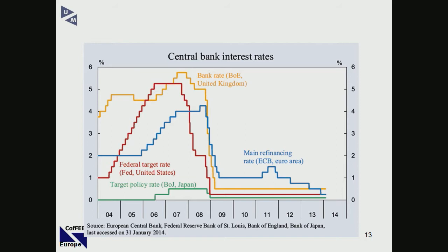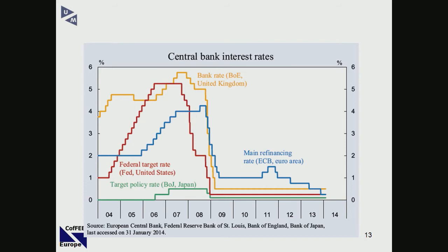In 2004 after the dot-com crisis, Greenspan lowered the interest rates like crazy. The American economy started to grow again, then interest rates went up. Then Lehman Brothers fell, and central banks started to lower the interest rate. But the economy kept on going bad. What should central banks do? Lower the interest rate. But the problem was — the interest rate was already zero. So you cannot lower it.